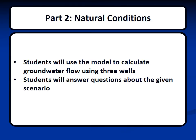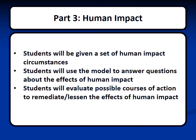Now that you have learned all about groundwater modeling, we can jump back to the Science Olympiad event rules. In Part 1, students take a written test on groundwater concepts. In Part 2, students use the groundwater model to calculate groundwater flow using three wells and answer questions about the given scenario. All of this leads into Part 3, which introduces human impact. Students will be given a set of human impact circumstances — possibly including pumping wells and a contaminant with its source. They will use the model to determine which wells are at risk of contamination and how long until they become contaminated. Finally, students will evaluate possible courses of action to remediate and/or lessen the effects of human impact.